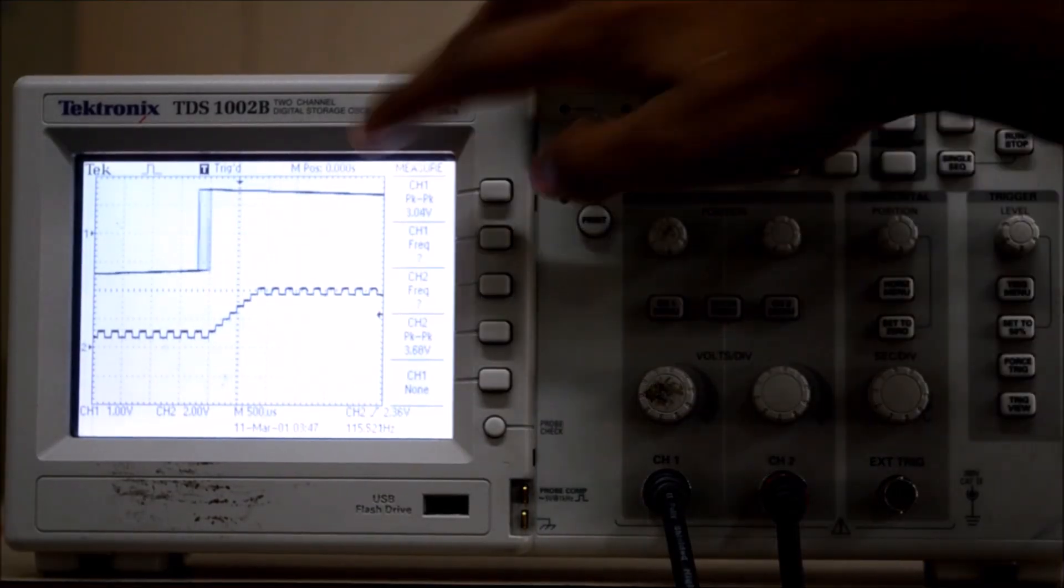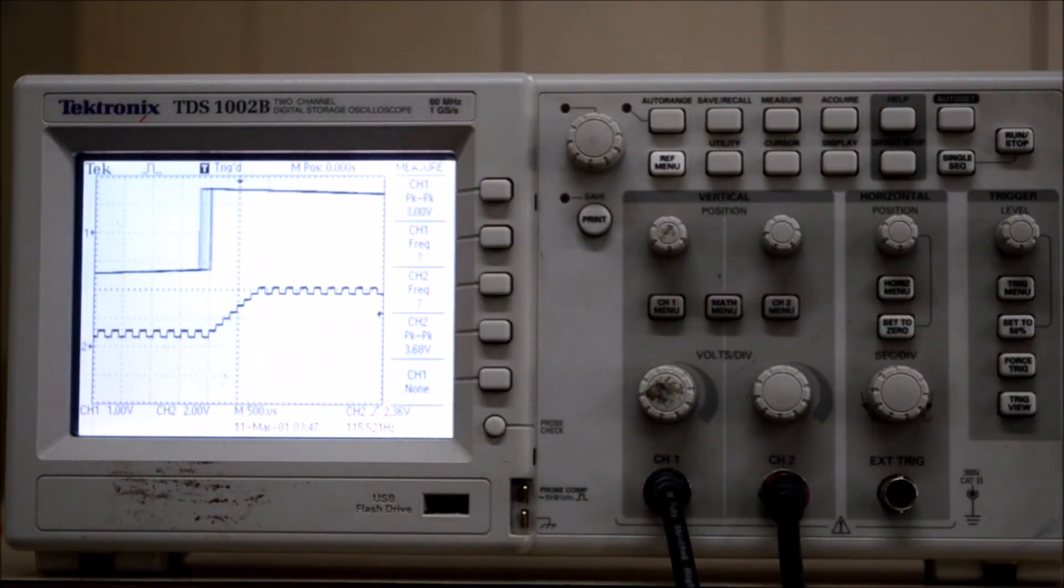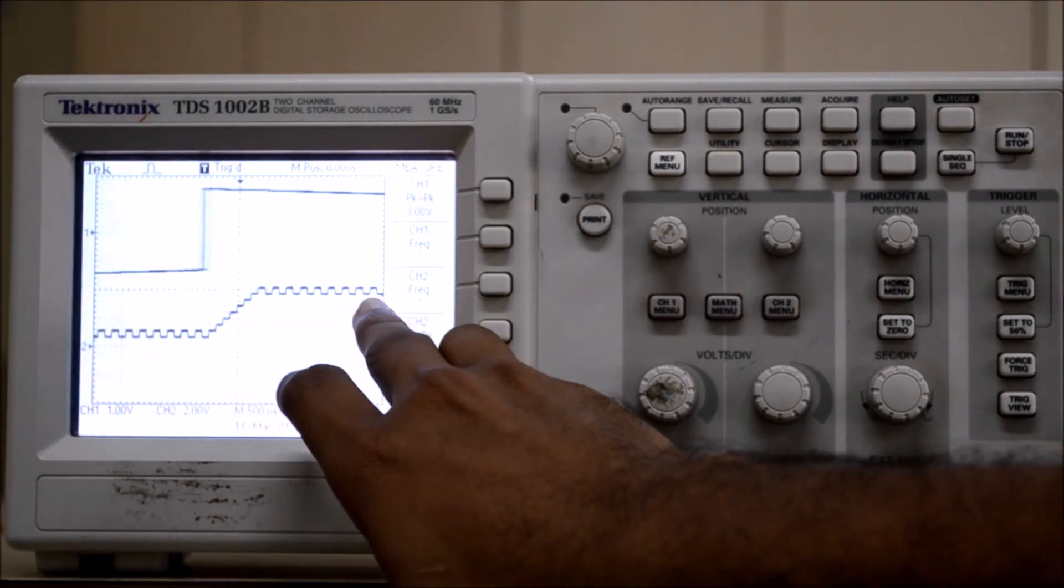For a given square wave input of very low frequency, say around 500 Hz, we can observe the DAC output as follows.